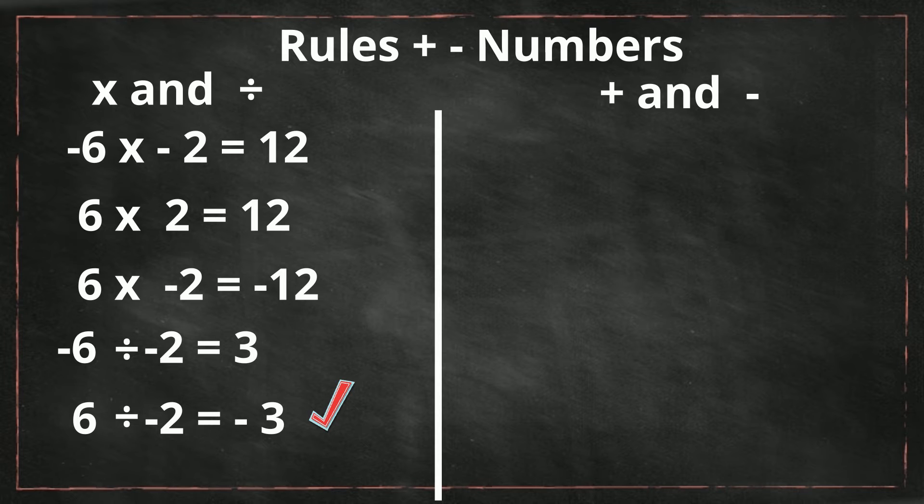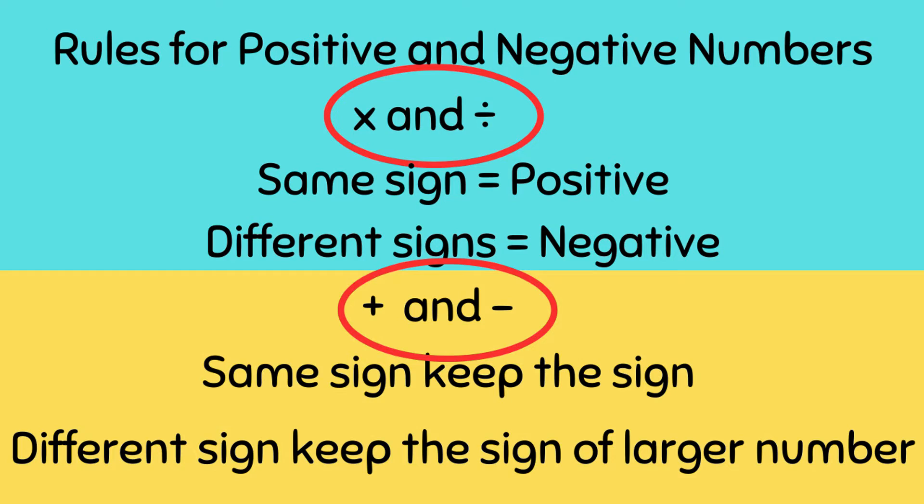Now let's look at addition and subtraction. And here are the rules to follow. Same signs, you keep the signs. Different signs, you take the larger number. So let's work through examples and see what that means.